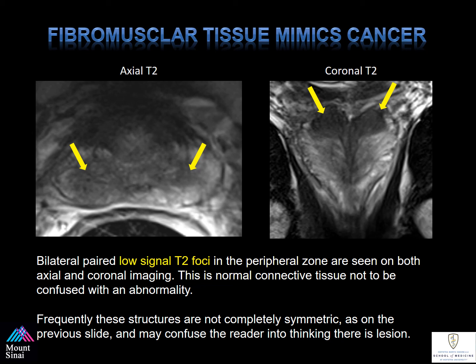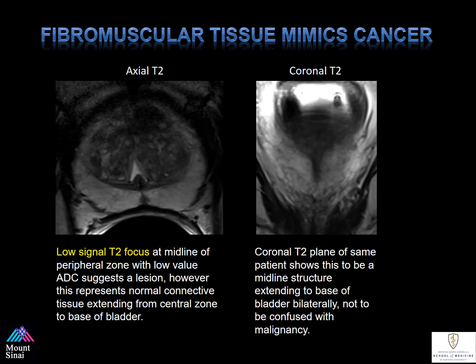Frequently, these structures are not completely symmetrical, as the previous slide showed, and this may confuse the reader into thinking these are lesions. A low-signal T2 focus at the midline of the peripheral zone with low ADC values suggests a lesion. However, this represents normal connective tissue extending from the central zone to the base of the bladder. The coronal T2 plane of the same patient shows this to be a midline structure extending to the base of the bladder bilaterally, not to be confused with malignancy.